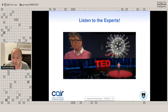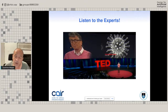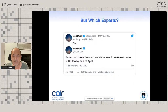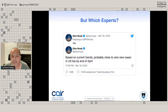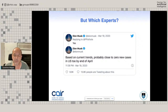On the other hand, Elon Musk in 2020 was saying — talking about COVID — that probably close to zero new cases in the U.S. by end of April. So the question is which of these experts should one be listening to? Here's Rodney Brooks, director of the AI lab at MIT, saying on the other hand that almost all innovations in robotics and AI take far, far longer to be really widely deployed than people in the field and outside imagine.